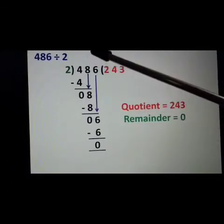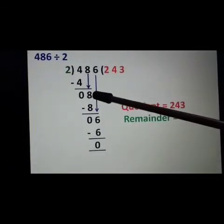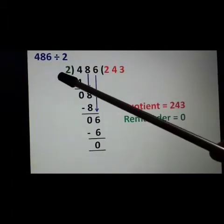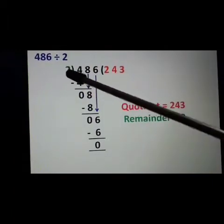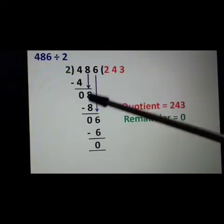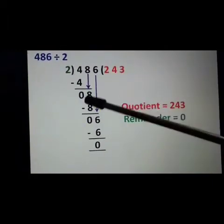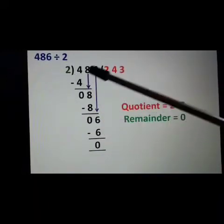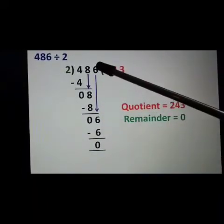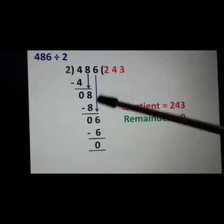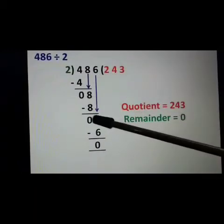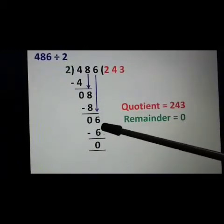Now copy down the number 8. Again we will say the table of 2: 2 fours are 8. 8 minus 8 equals 0. Now we will copy down the next number 6. 2 threes are 6.